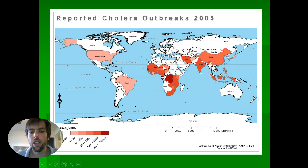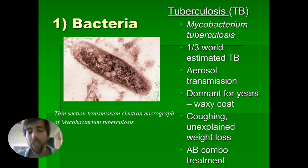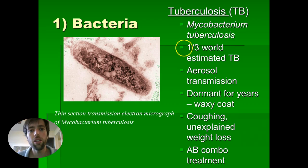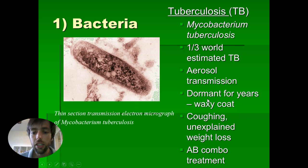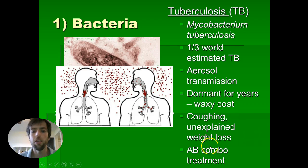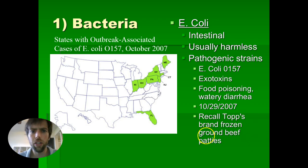A 2005 map shows cholera is mainly in Asia and Africa, not so much in the United States. One that's slightly more common is tuberculosis. In 2014, there were stories about students in the Kansas City area — somewhere around Shawnee Mission — who were discovered to have tuberculosis in their lungs. Most people don't know if they have it because it can be dormant for years. Coughing is what spreads it, and weight loss you can't explain could be a sign. Just like other bacterial infections, antibiotics tend to take care of it.